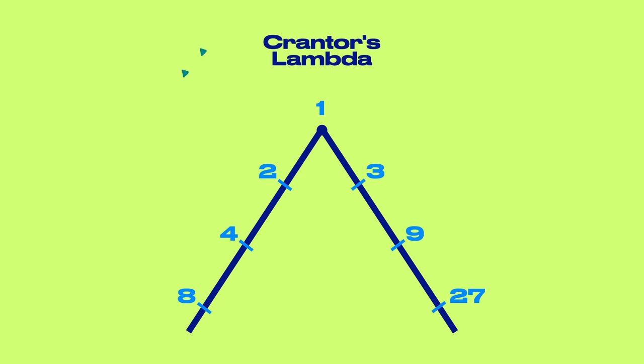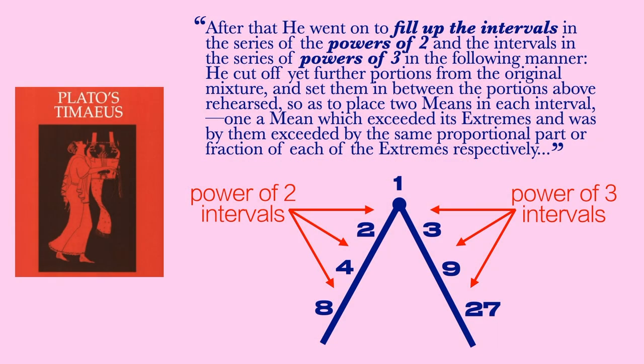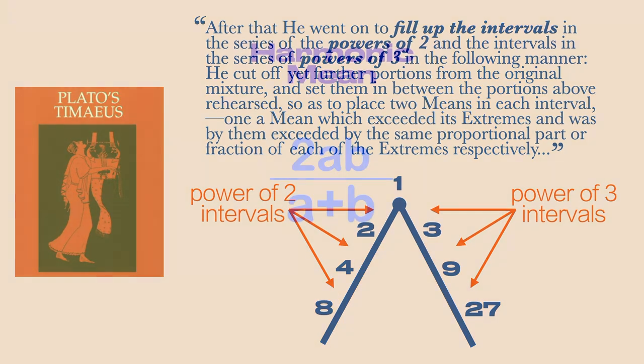Plato tells us that the demiurge filled the intervals with means. A mean is a point between two extremes, that exceeds its lower extreme, so it's above it, and is exceeded by its upper extreme, so it's below it. It will land somewhere within this interval, depending on what kind of mean it is. Plato says that the first mean both exceeds and is exceeded by the same proportion. This is the description of a harmonic mean.